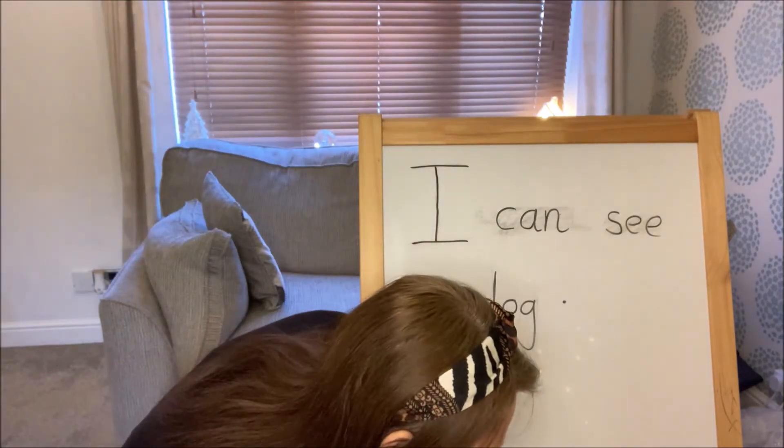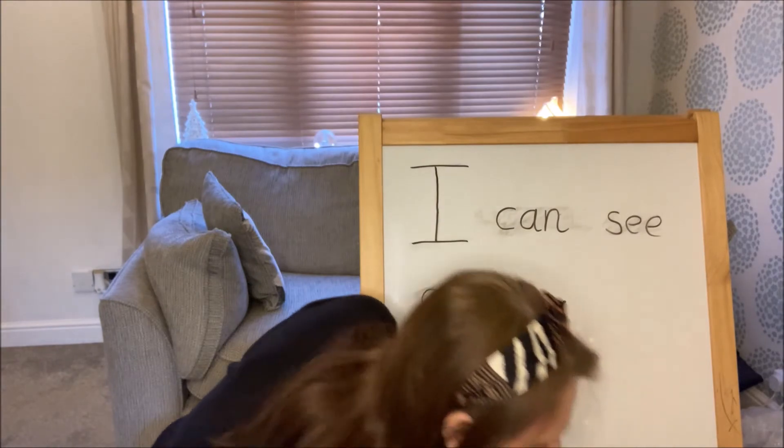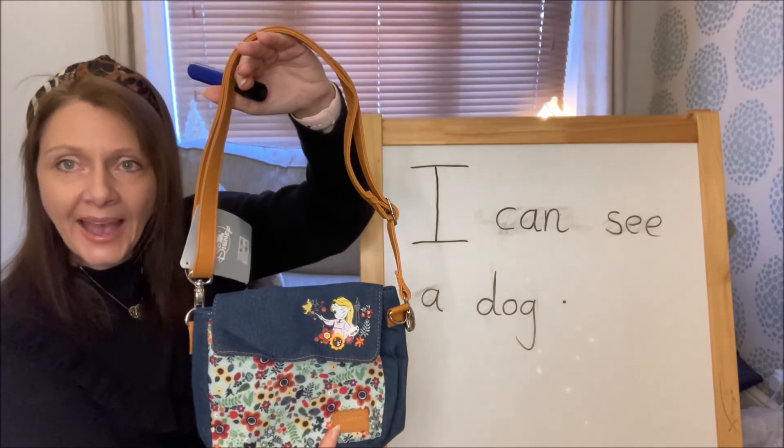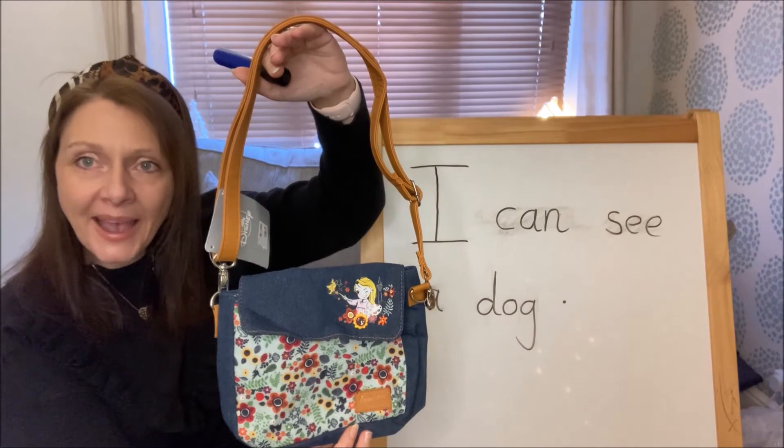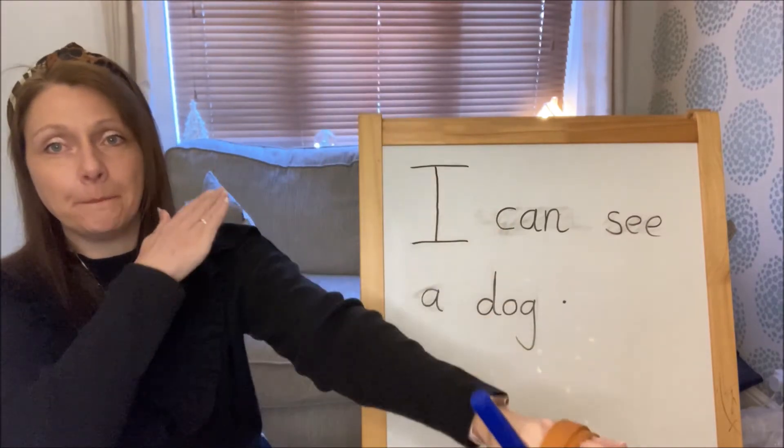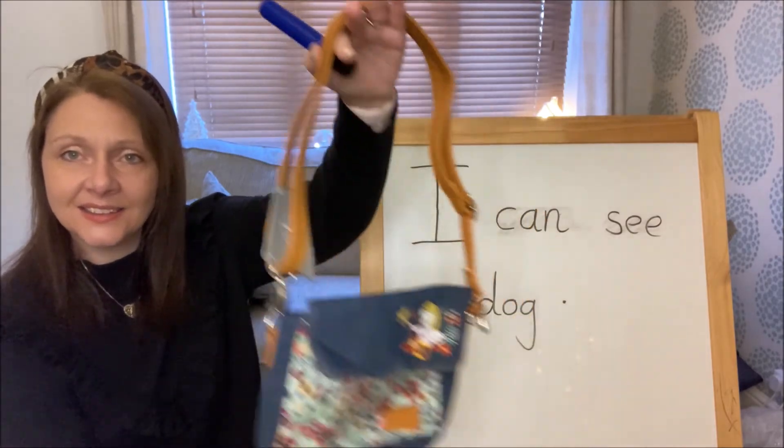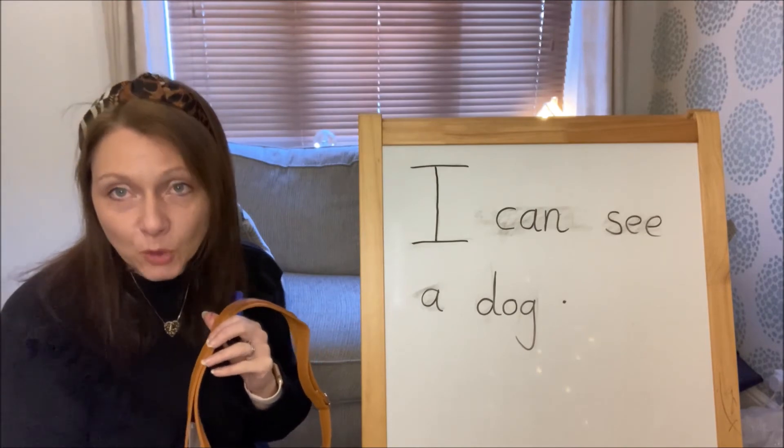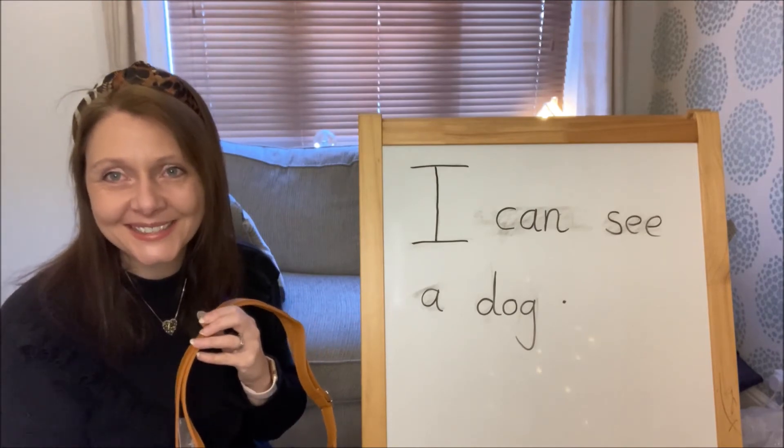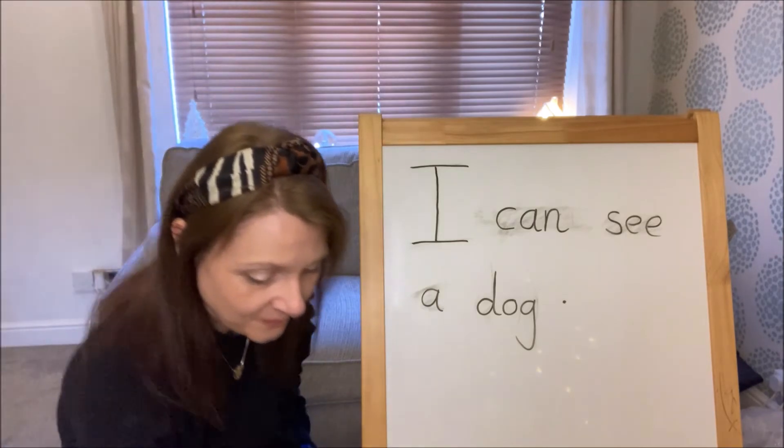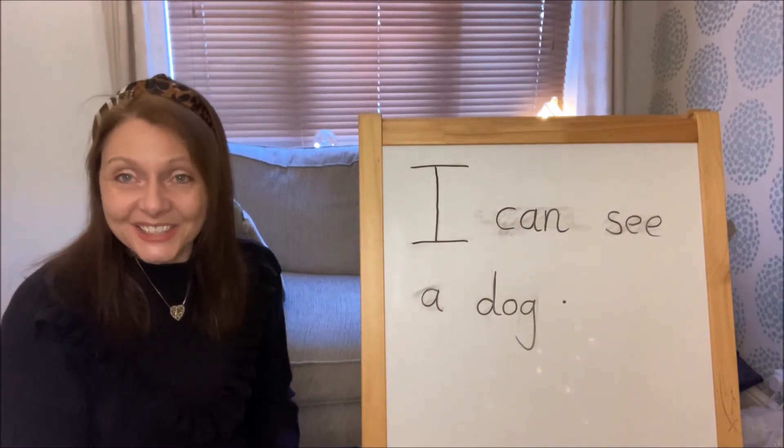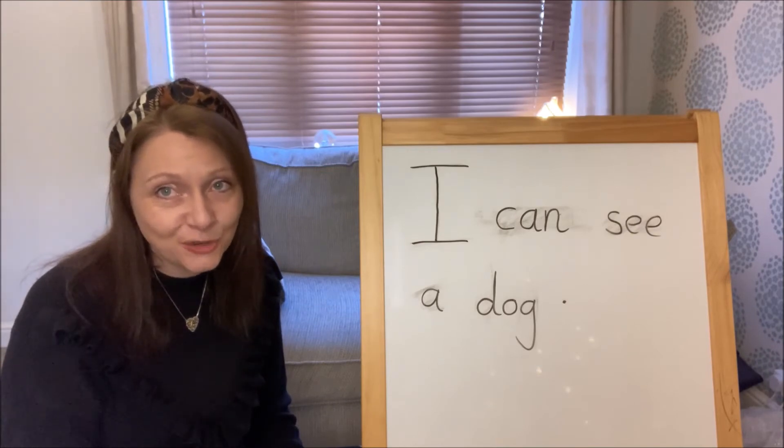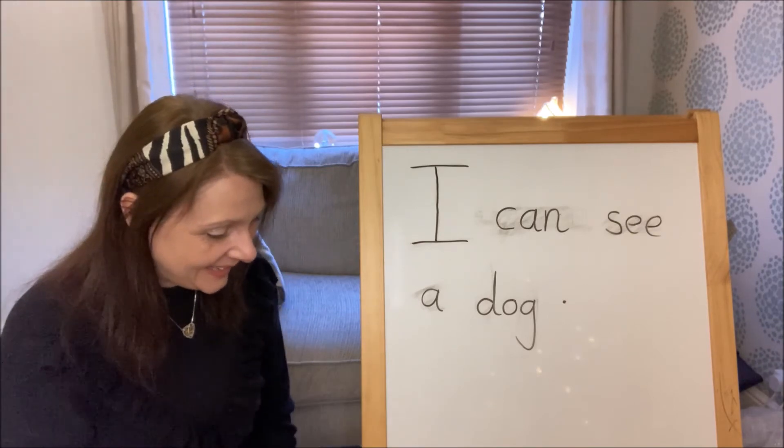Next, I'm going to show you something else. It's a bag. I can see a bag. B-A-G. B-A-G. Bag. You try and write, I can see a bag. Pause the video, write it now and I'll see you again in a minute. Welcome back. You tried. Well done. Super sentence. Did you remember your capital letter and your full stop? Good. Good.